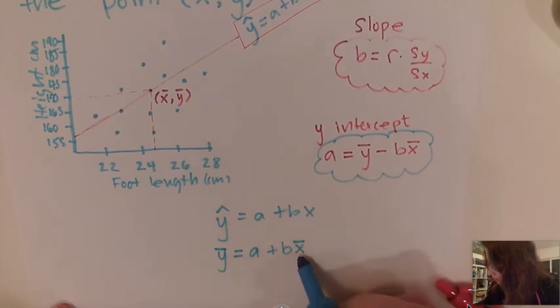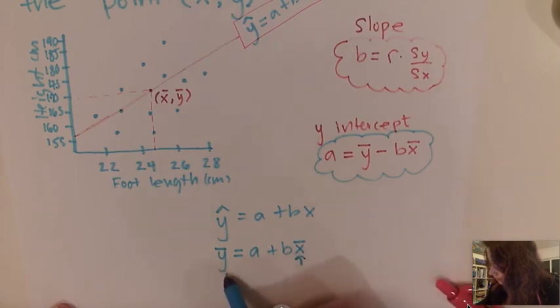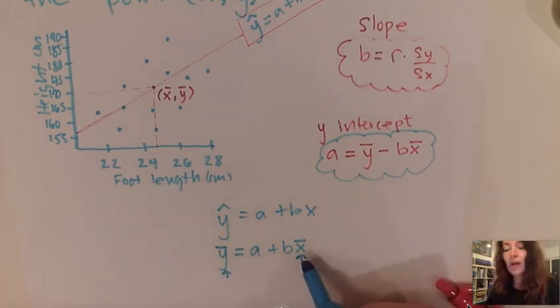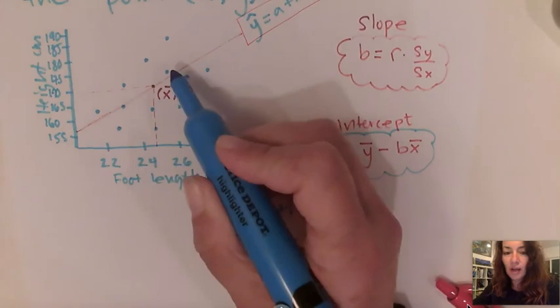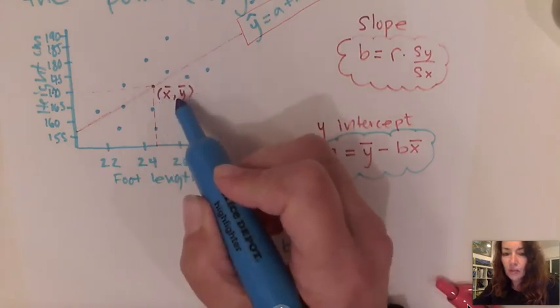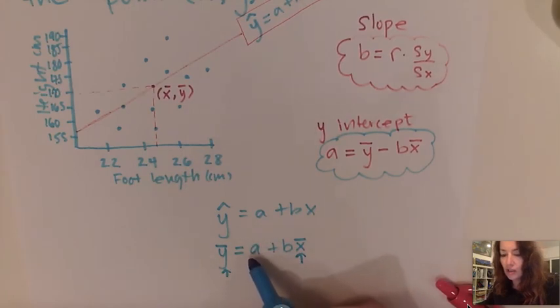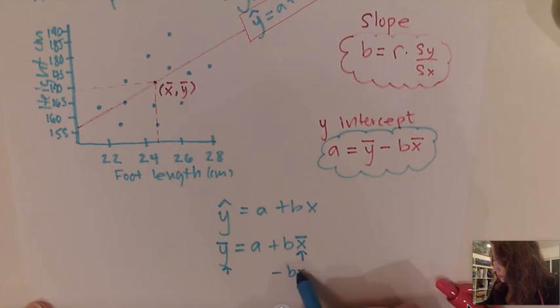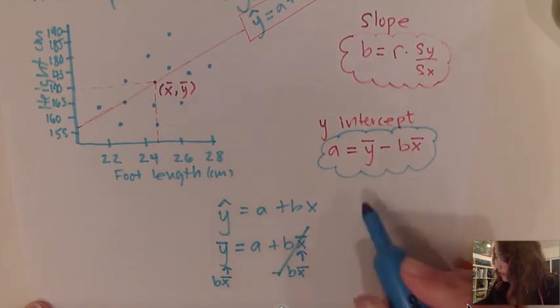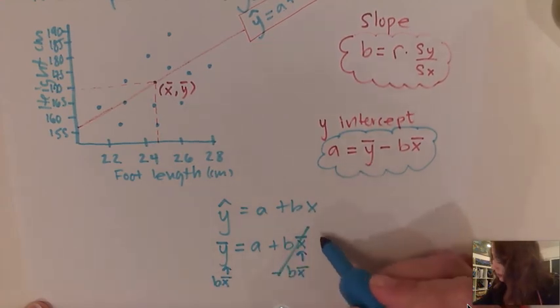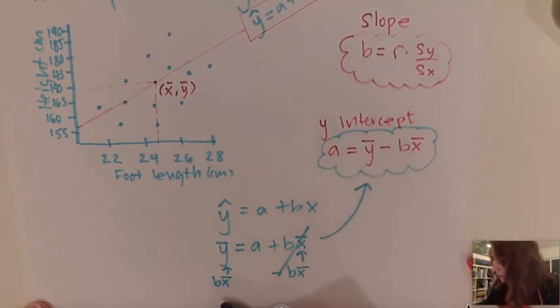this is our input values and this is our output values. Now we know that on the best fit line, the average of x and average of y are always there. So if I input that directly into the equation and then I solve for a, that means subtract b times the average of x. If I subtract that on both sides,